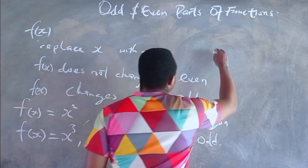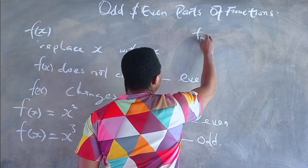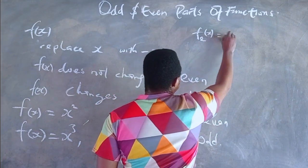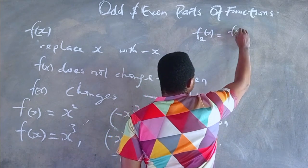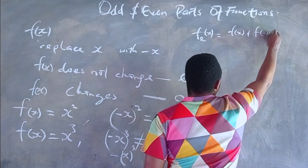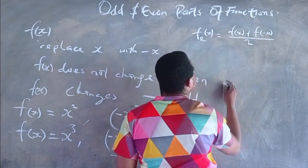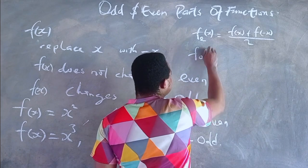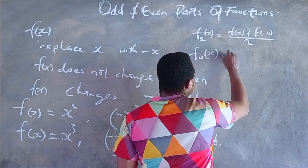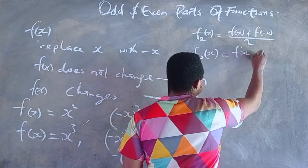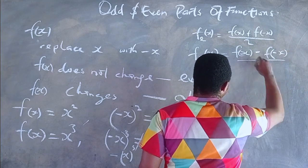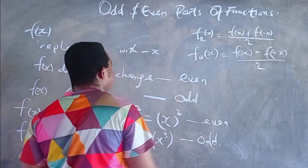A function can also have odd parts and even parts. The even part of a function is given as f sub e of x, and the formula for obtaining it is f of x plus f of negative x, divided by 2. The formula for obtaining the odd part of a function is f naught of x, which equals f of x minus f of negative x, divided by 2.